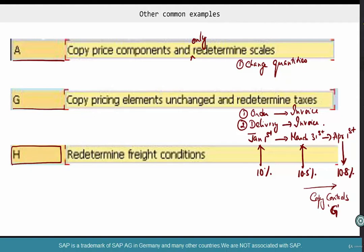A pricing type controls whether, based on these parameters, your pricing should be redetermined or not. So, these are some examples that we are trying to see, some concrete examples. A is redetermine scales. B is do pricing all over from scratch. C is do everything from scratch, but make sure that any manual changes are respected. G is redetermine only taxes, everything else remains the same.